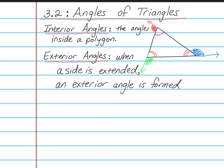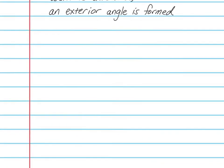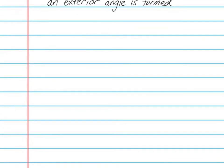There are two main concepts in this section. The first one has to do with interior angles of a triangle, and the second one has to do with exterior angles of a triangle. So let's first talk about the one that has to do with interior angles.